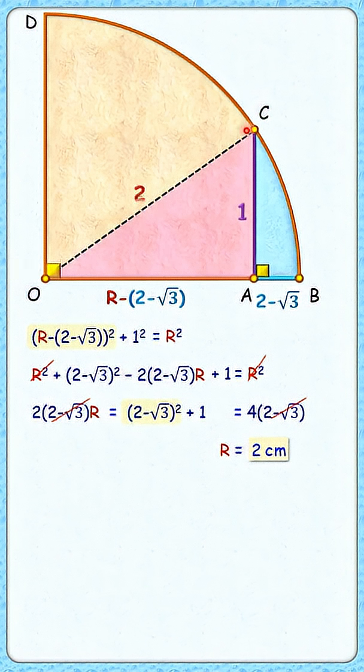That is, OC length is 2 centimeters and OA length will be √3 centimeters.